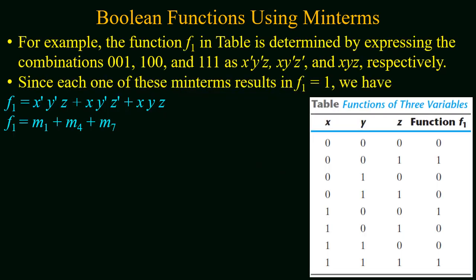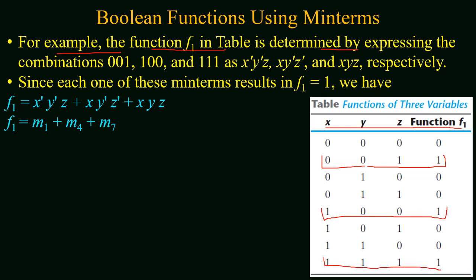In the given example, we have a truth table for three variables and output function f1. We have to form the function using min terms. First, we identify all binary combinations of the input for which the output function is equal to 1. Looking at the table, for combinations 0,0,1 and 1,0,0 and 1,1,1, the output function has a value of 1. Corresponding to these combinations we will make the min terms.